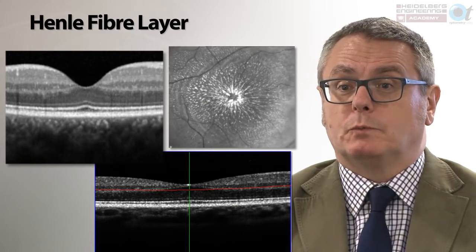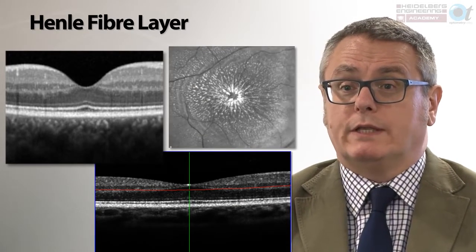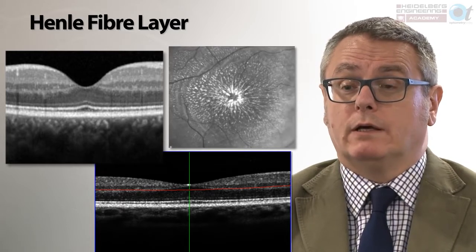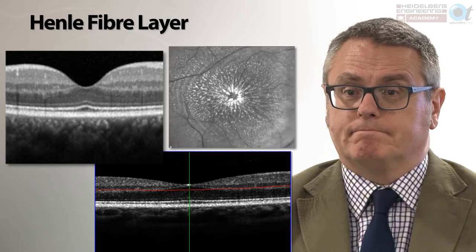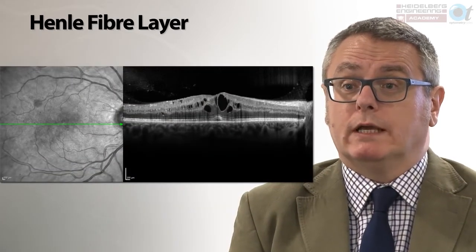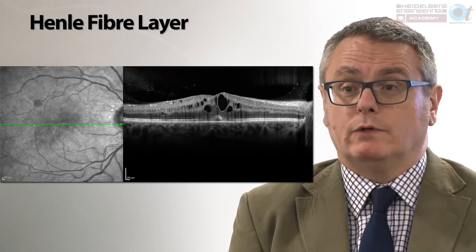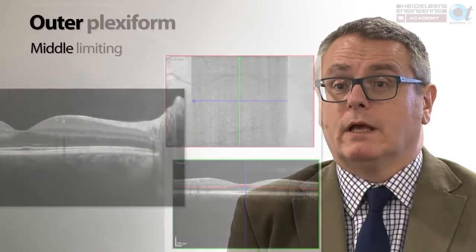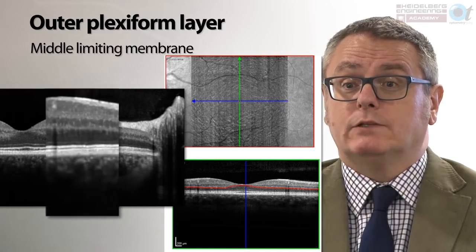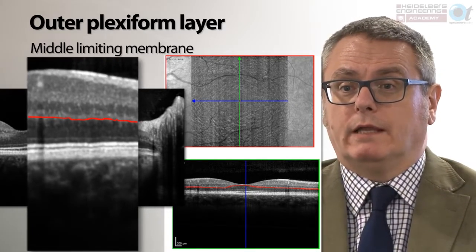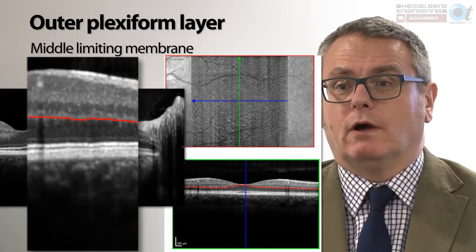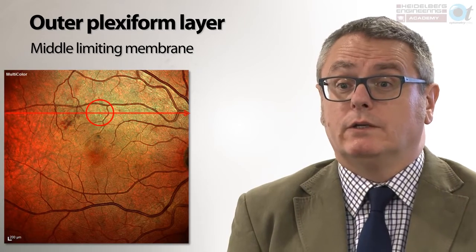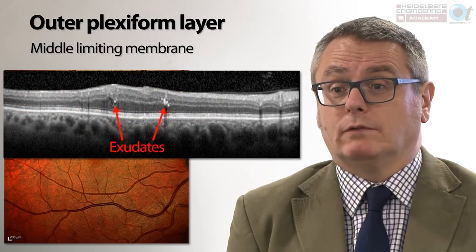Within the outer nuclear layer it is possible to perceive another band — Henley's fibre layer — where the inner fibres of the photoreceptors taper away to form the foveal depression. The image on the right shows a patient with a macular star where exudate follows the radial pattern of Henley's fibre layer. Henley's fibre layer is important because in retinal vascular disease, intraretinal fluid or retinal cysts form in front of it. The outer plexiform layer forms a middle limiting membrane, and exudate will not pass beyond this position. The high magnification OCT cross-section confirms exudate at the level of the outer plexiform layer.